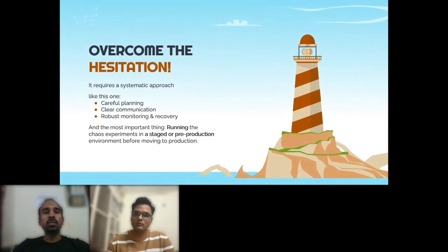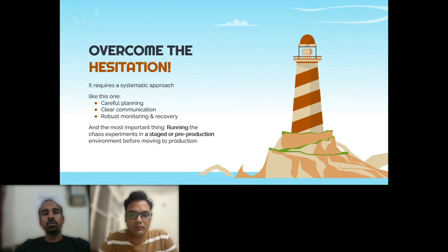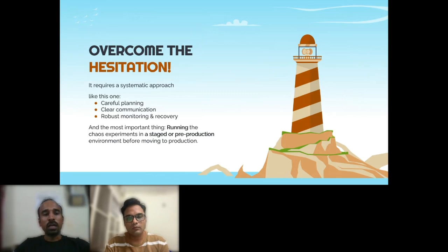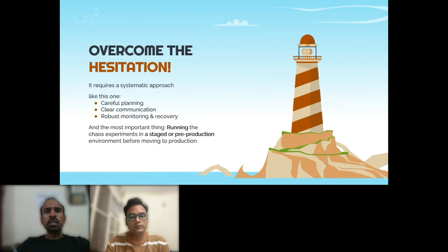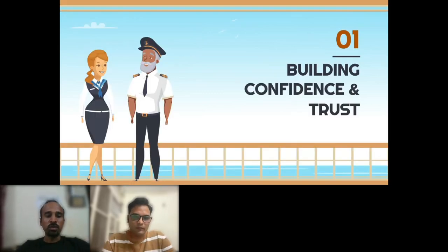So how can we overcome these hesitations? We know the challenges, but how can we address them in an engineering way and gain the confidence of our leadership to get approval to run chaos simulations in production systematically? First, we have to plan carefully and clearly communicate to all stakeholders. We should have robust monitoring and recovery procedures, and we should definitely run chaos experiments in a staged or pre-production environment first to gain confidence before approaching production.